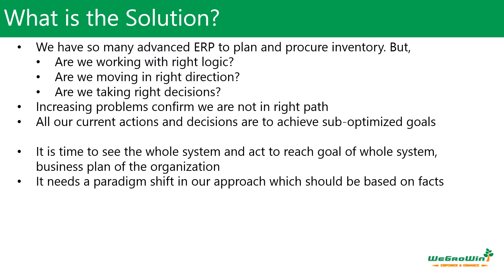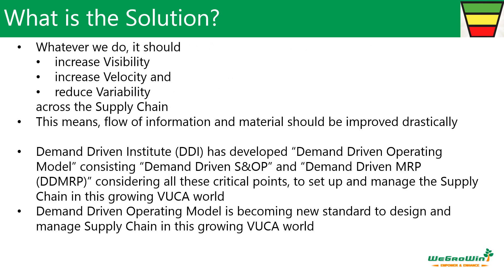It is time to see the whole system and to have a paradigm shift in our approach — to see all overall processes as one system. Whatever we do, we should increase visibility across the supply chain, increase velocity across the supply chain, and reduce variability across the supply chain. This means the flow of information and material should be improved drastically.